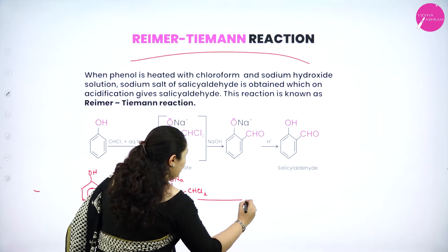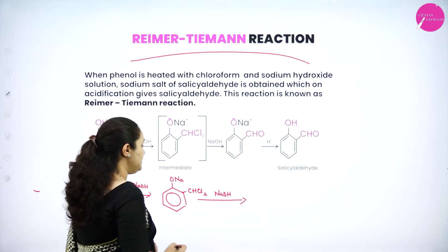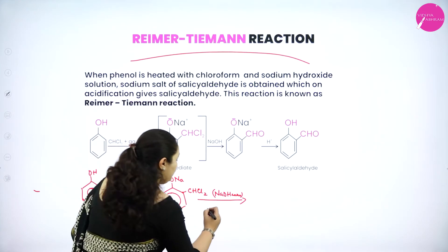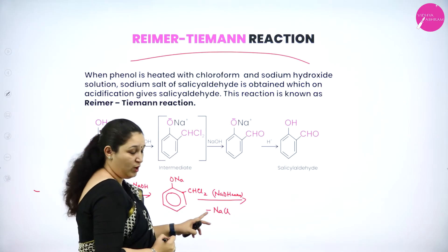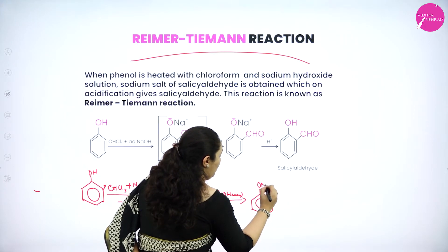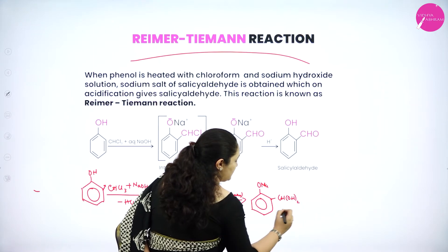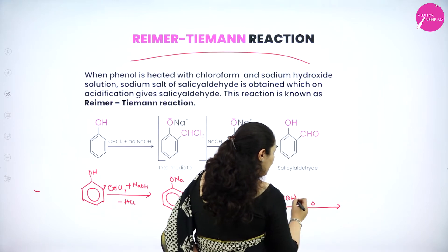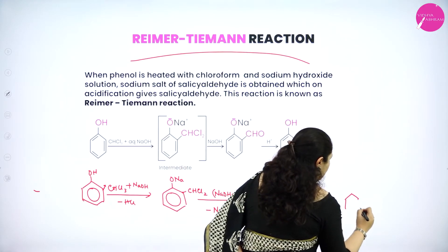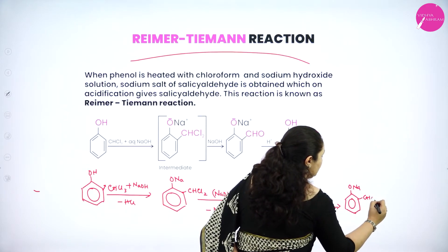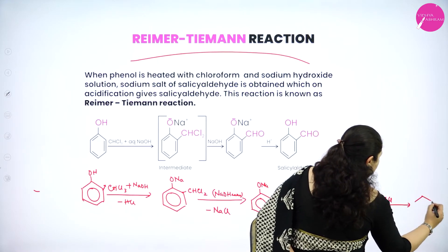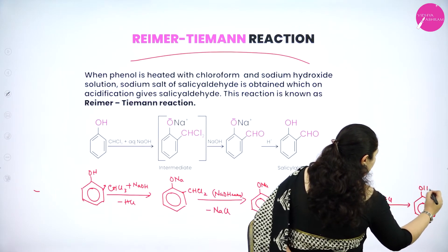Further, this intermediate is treated with excess sodium hydroxide. Two chlorines are removed with two Na to form NaCl (two molecules), and instead of the two chlorines, two OH groups come in. So you have ONa and CH(OH)2. Further, on heating, H2O is removed from the two OH groups — one oxygen remains — giving ONa and CHO.